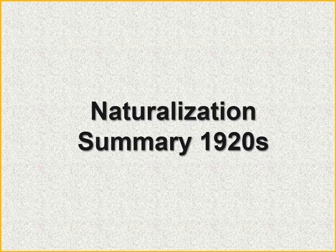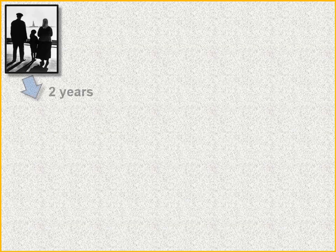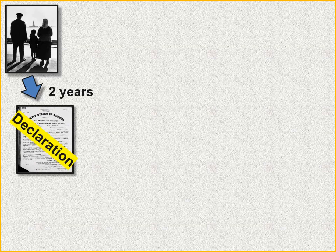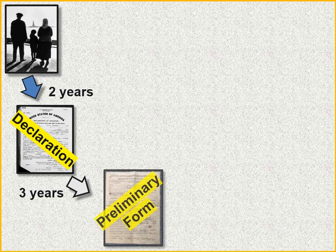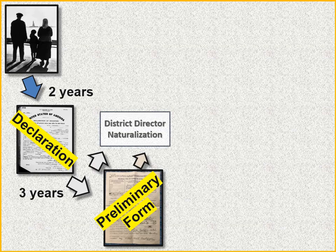Let's do a summary of naturalization in the 1920s. Once you got off the boat and were a legal resident, two years later you submitted your Declaration of Intention. Then at least three more years passed before you could submit your petition. But first, there was a preliminary form needed to get everything together, which you would then mail to the District Director of Naturalization along with the Declaration.